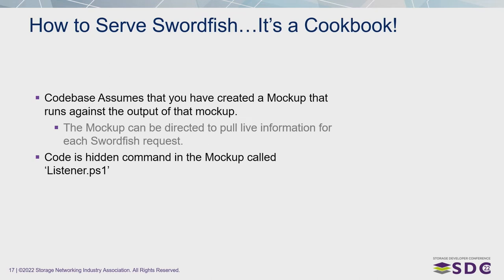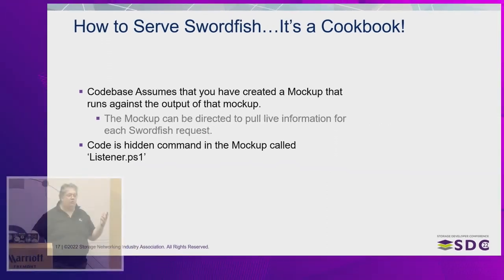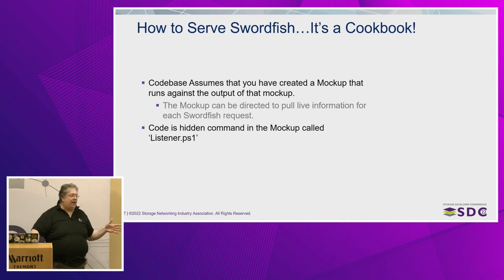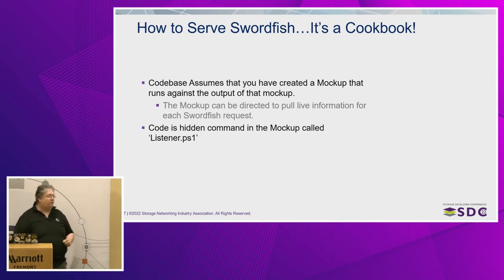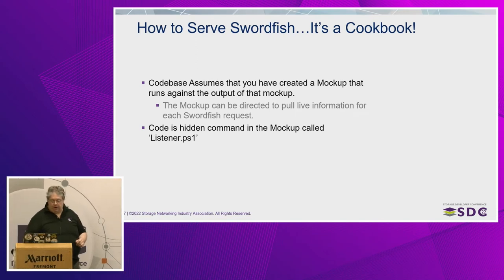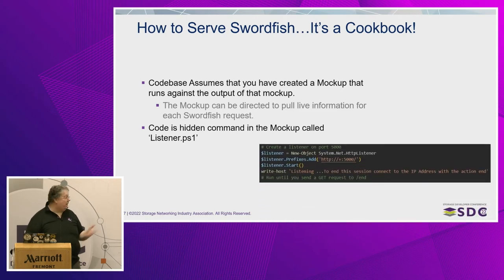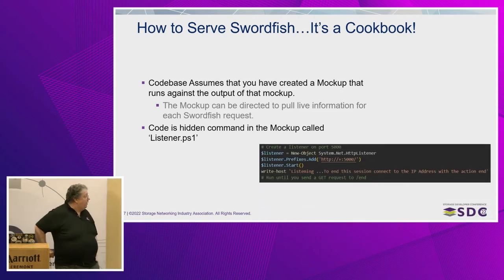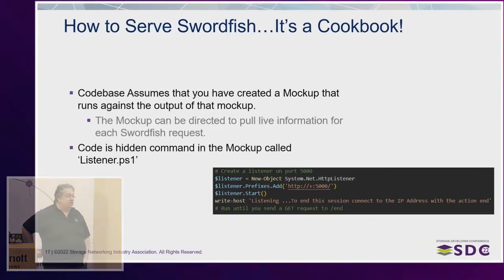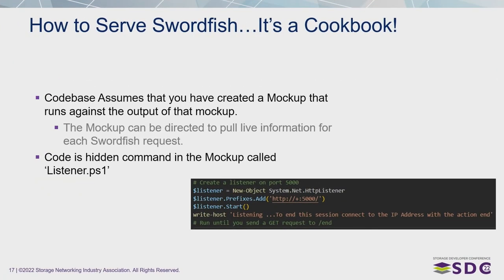I've written a mock-up that talks to a Nimble array as an example, but you could do this to a Pure array, a Dell array, anybody's array out there — you could write your own Swordfish implementation that would do exactly that. You can do this in Python; it doesn't matter what language you use. I basically wrote a little piece of code that starts a listener that listens for Swordfish commands and talks and pushes it to an array. You can download that and see how it's all done — all of it's open source, nothing is secret, nothing I write is compiled, everything is open and viewable on GitHub.